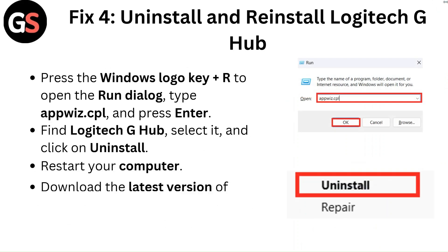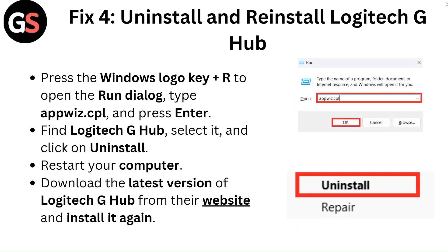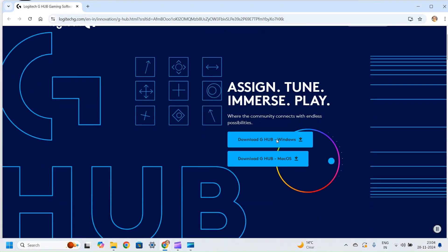Fix 4: Uninstall and reinstall Logitech G Hub. Press the Windows logo key plus R to open the Run dialog, type appwiz.cpl and press Enter. Find Logitech G Hub, select it, and click Uninstall. Restart your computer, then download the latest version of Logitech G Hub from their website and install it again.